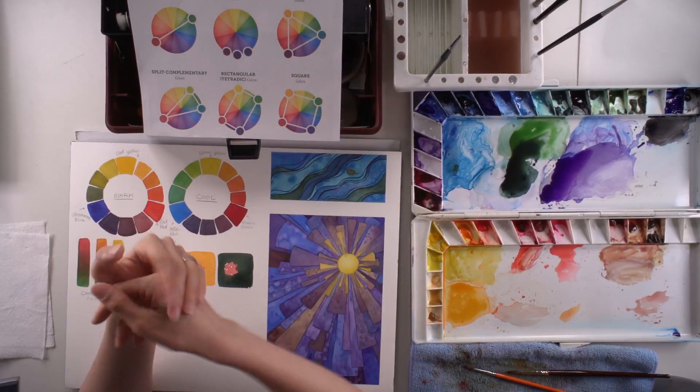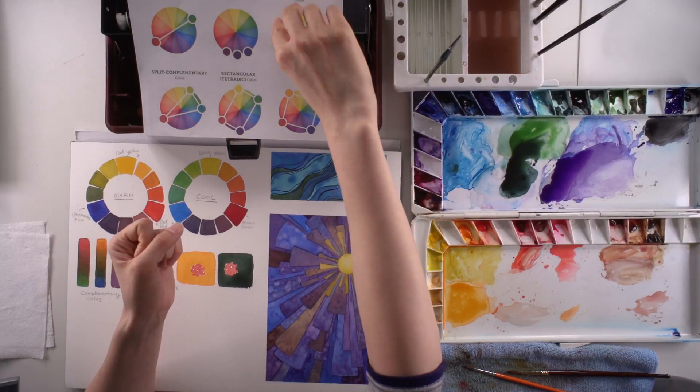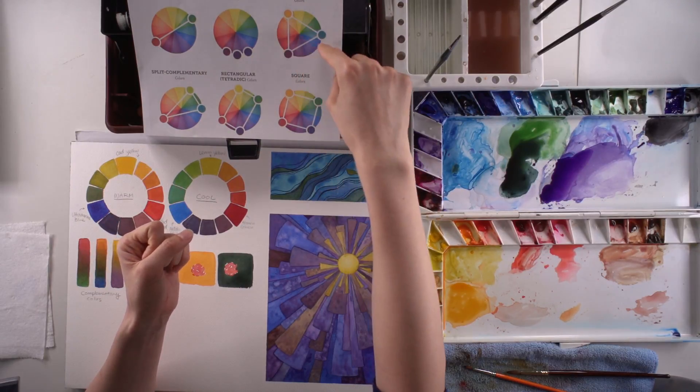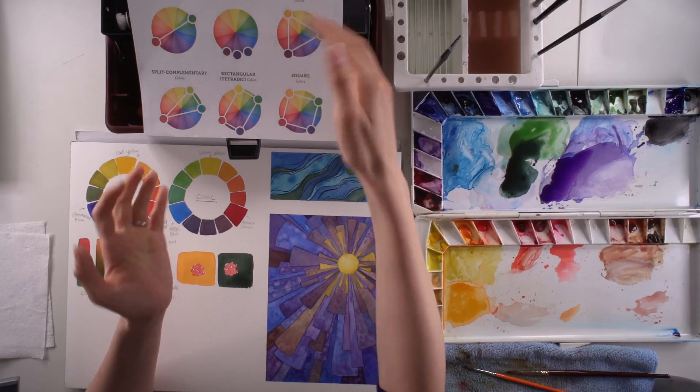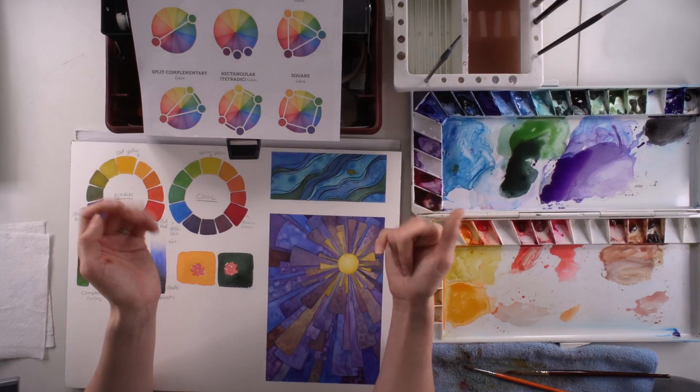And of course, there are others too. There's a triadic, a triangle one. If you move it right on the yellow, red, and blue, that's a primary color triadic. Those are actually a tougher color scheme to work with.